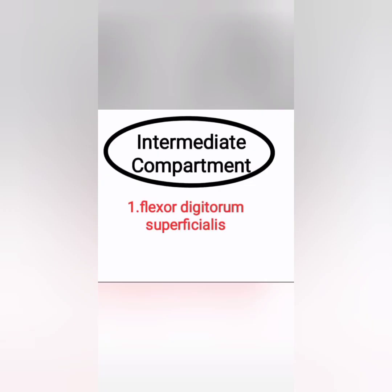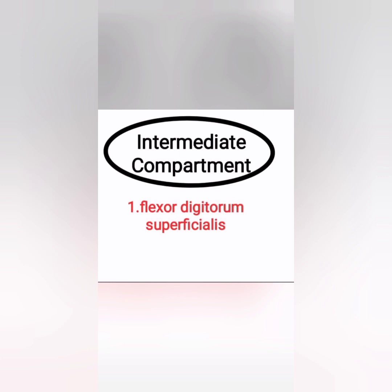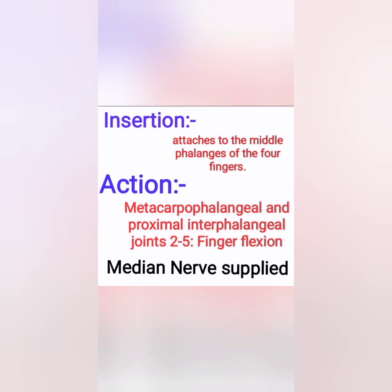Next is the intermediate compartment, which consists of only one muscle: flexor digitorum superficialis. FDS is a two-headed muscle — one head originates from the medial epicondyle and the other from the radius. This muscle splits into four tendons which pass through the carpal tunnel and insert into the middle phalanges of the fingers. Its action is to flex the metacarpophalangeal joint and proximal interphalangeal joint of the fingers, and also to flex the wrist.